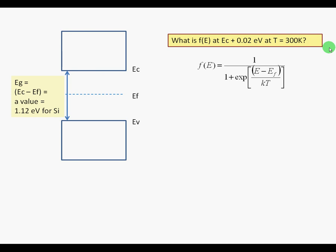The first step is to locate the energy where you're evaluating F of E. In this case, the energy is 0.02 eV above E sub C, which is this energy indicated by the red arrow.